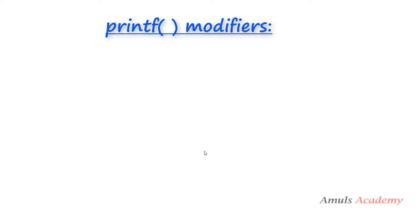Using modifiers we can do many things like changing the width of the output, sign of the value, etc. We can include these modifiers with the format specifiers, and there are 4 modifiers — all of which are optional. In the previous tutorial example we didn't use any modifiers. The format specifier contains a % symbol first, then followed by the conversion character, and we can include a modifier between the % symbol and conversion character.